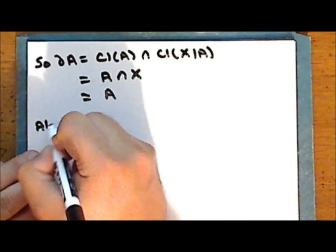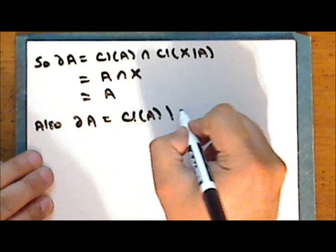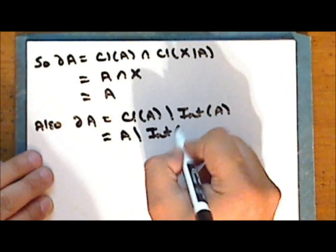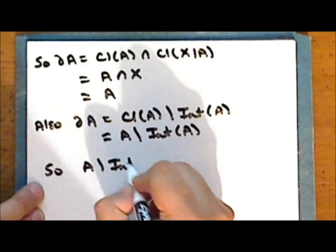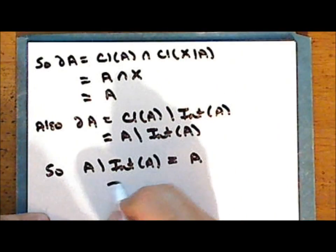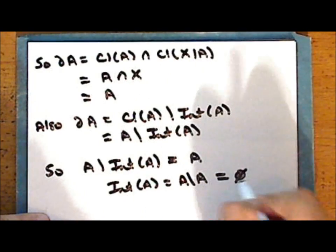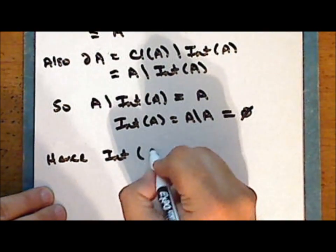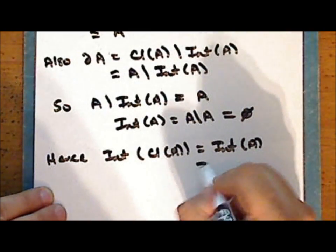Now also we have that the boundary of A is the closure of A set minus the interior of the set A, which is the set A set minus its interior. And so the complement of the interior of A in A is empty, and hence the interior of the set A is empty.